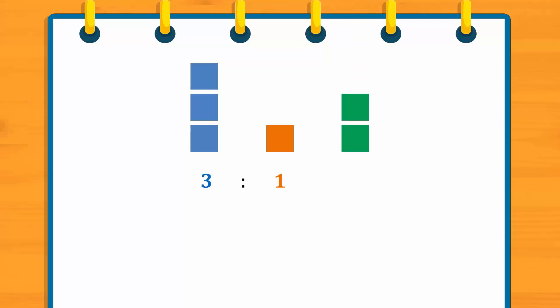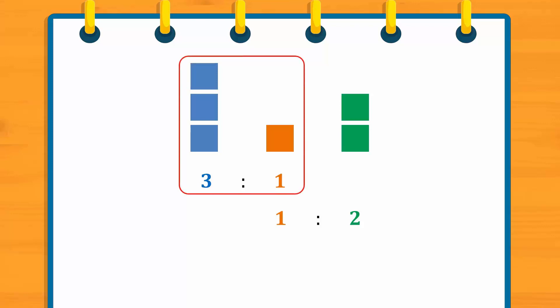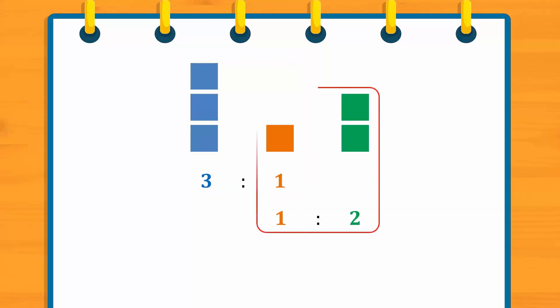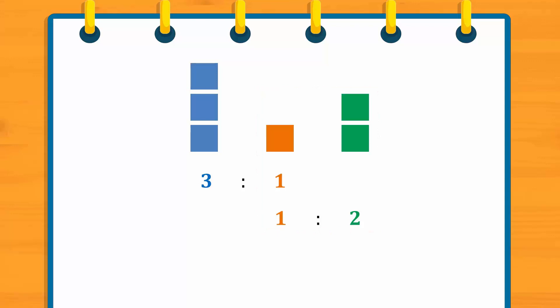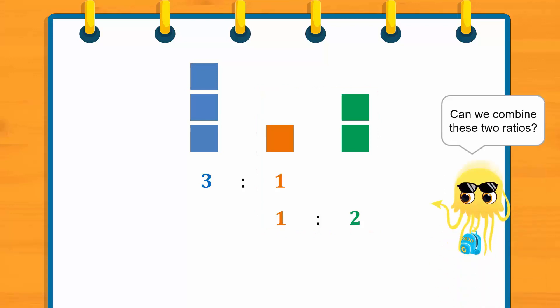Now suppose we have another two green boxes. The ratio of orange boxes to green boxes is then 1 to 2. The ratio 3 to 1 compares the number of blue boxes to orange boxes, while the ratio 1 to 2 compares the number of orange boxes to green boxes. Can we combine these two ratios?